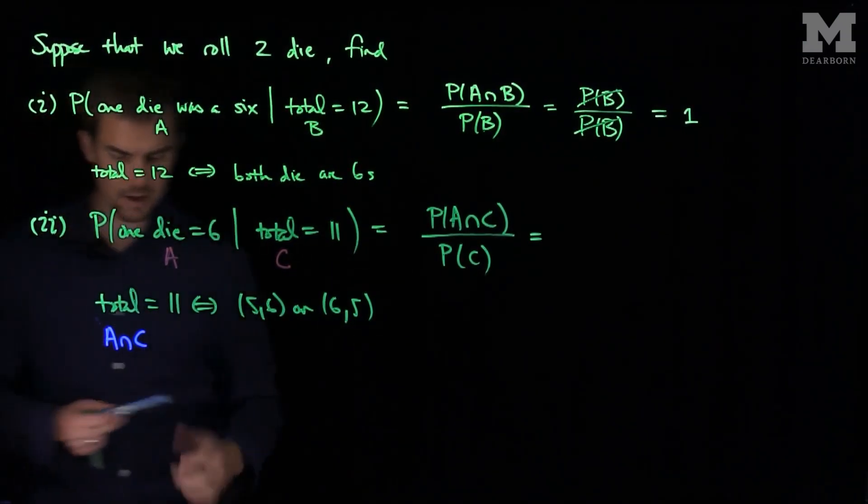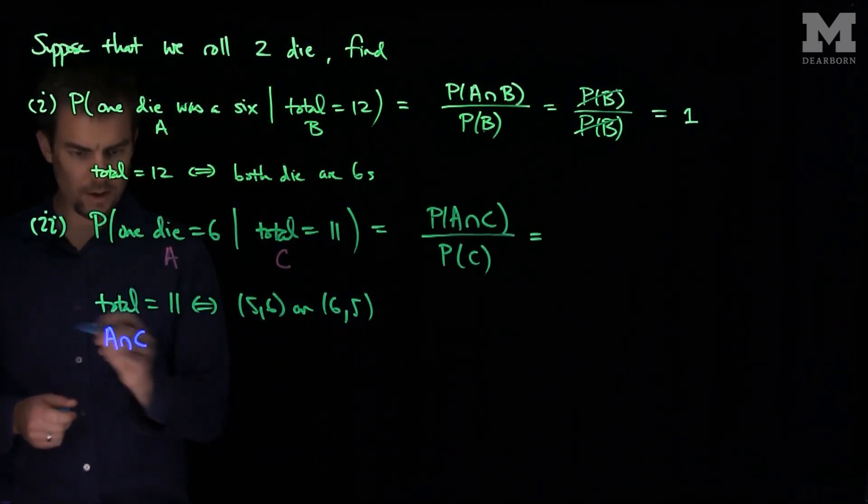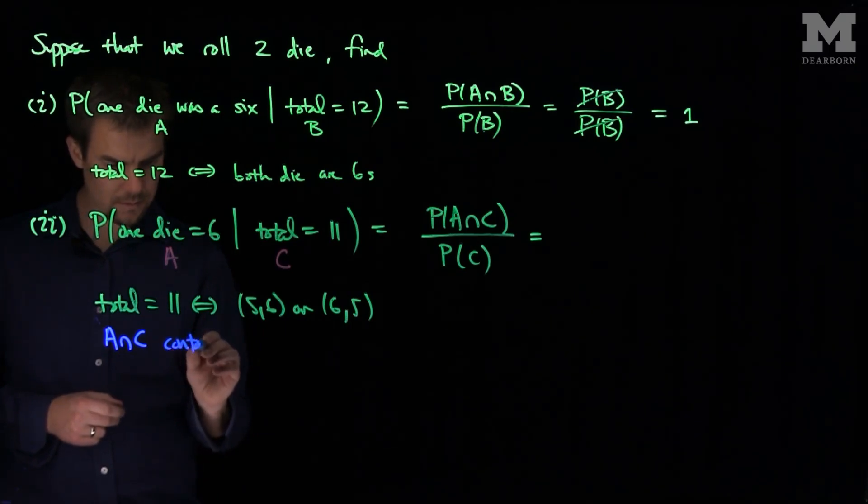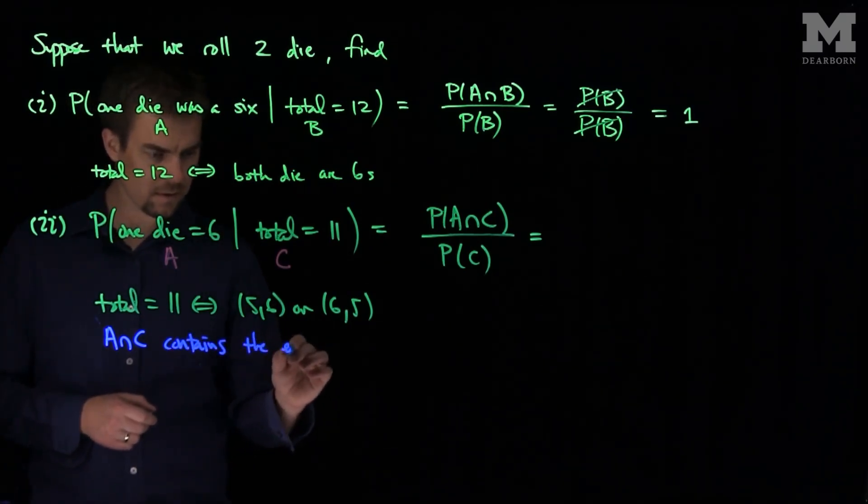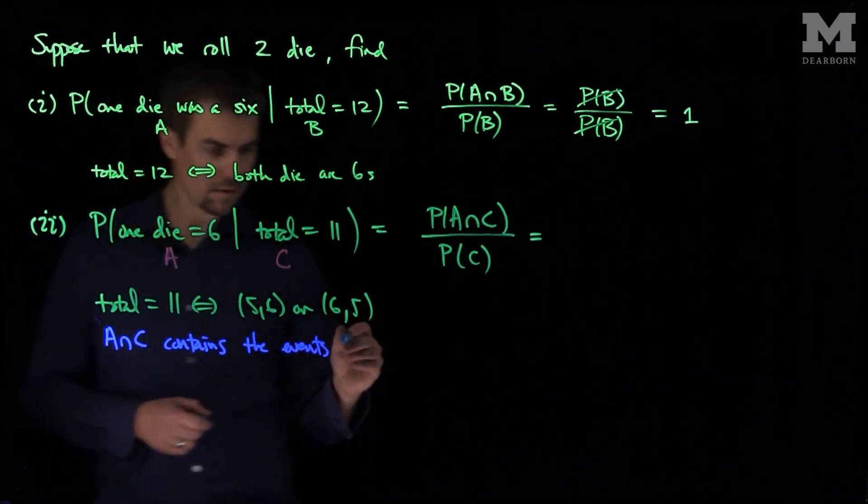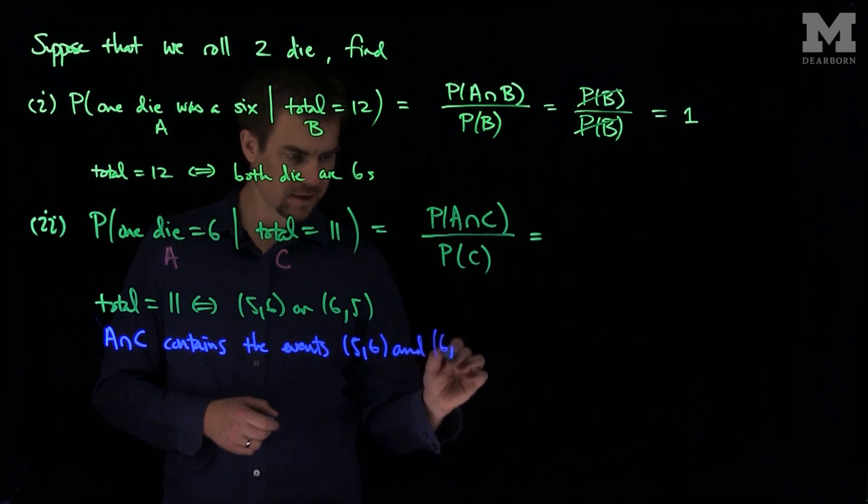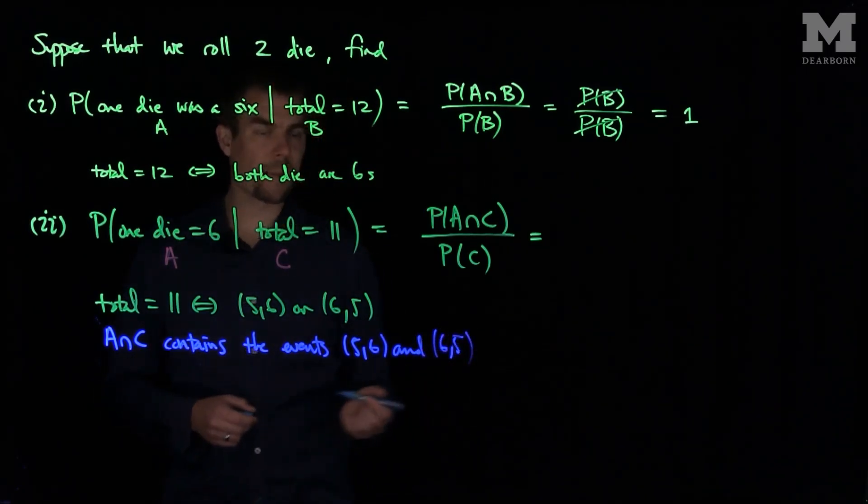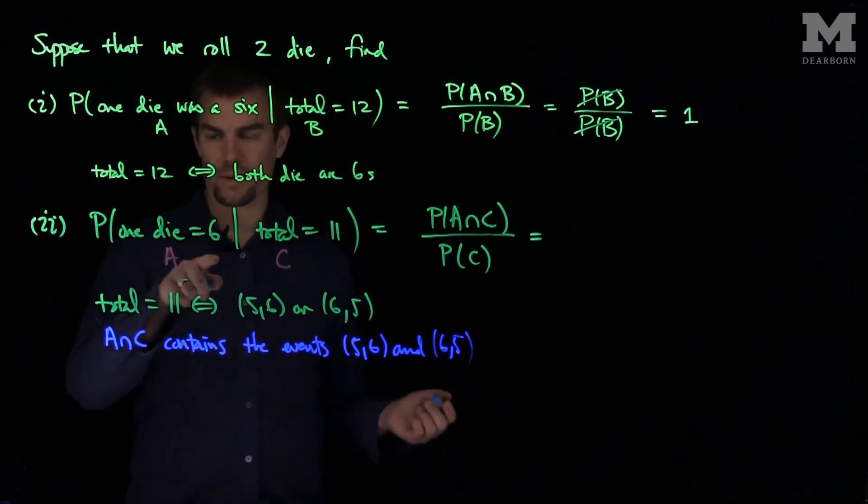So A intersect C contains the events 5, 6 and 6, 5.